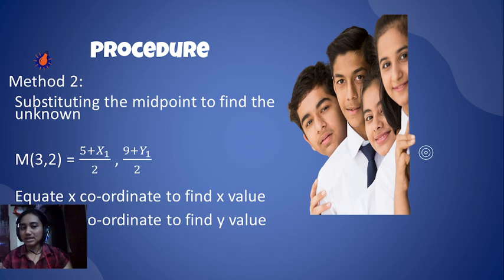Now they gave you the midpoint and they're asking you to find one of the unknown coordinates. In that case, what would you do? Simply substitute the midpoint coordinates and then equate x coordinate and y coordinate. Finally, you get x and y values.